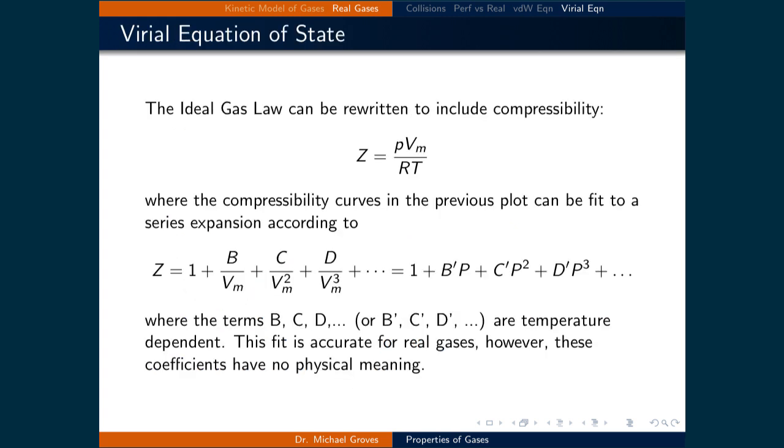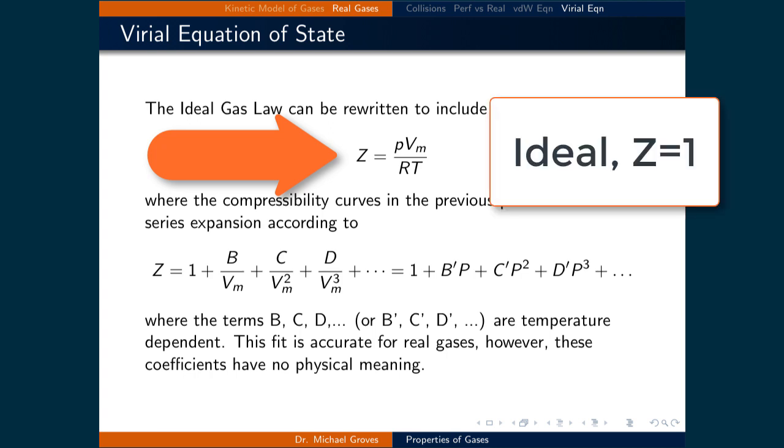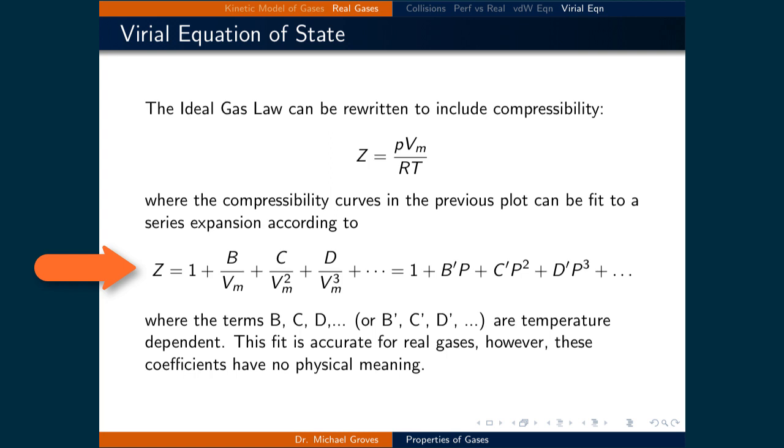The ideal gas law can be rewritten to include compressibility. In this case, Z is equal to P times the molar volume divided by R times T. When Z is equal to 1, the gas is characterized as ideal. When the gas is not ideal, the compressibility is fit according to a series expansion using either the molar volume or the pressure.